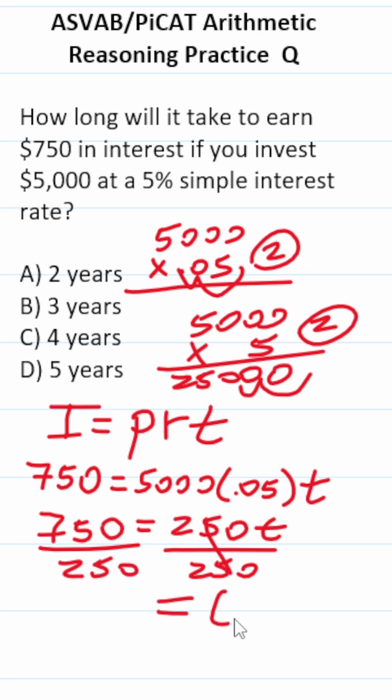This crosses out here, leaving us with t. Cross out these corresponding zeros. 75 divided by 25 is 3. It's going to take three years to earn $750 in interest.